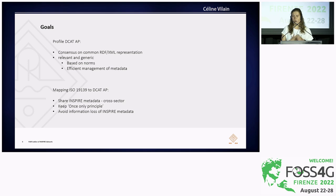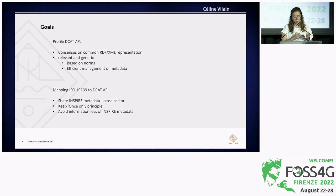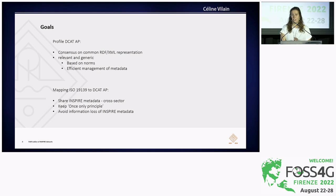The goal of the project was to create a profile and also to suggest a mapping. For the profile, the idea was to have, on federal level, a consensus on the RDF representation, with a relevant and generic profile based on norms. We also want to add our expertise in metadata management from the INSPIRE world. For the mapping, the idea was to enable sharing INSPIRE metadata across sectors. When a publisher wants to publish metadata, it just needs to do it once and it's automatically converted to another standard — and we have control over which metadata is kept, so we avoid information loss of the INSPIRE metadata.